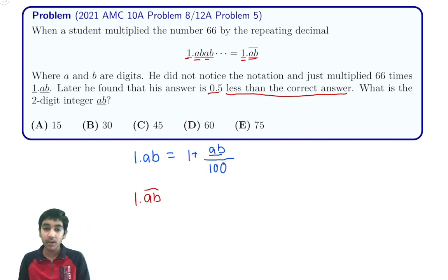Well, it's a common property of repeating decimals that don't terminate, that repeat over and over, which is going to equal 1 plus AB over 99.